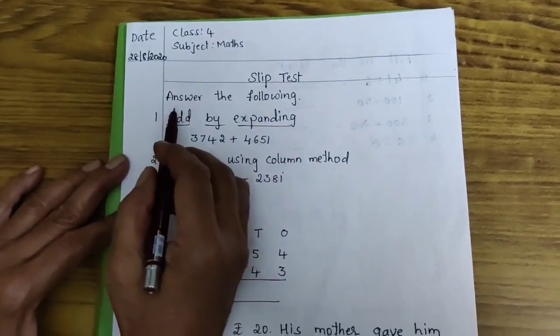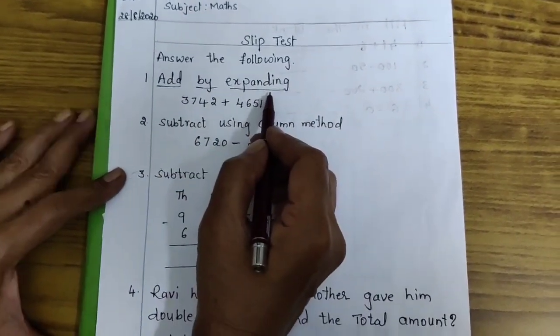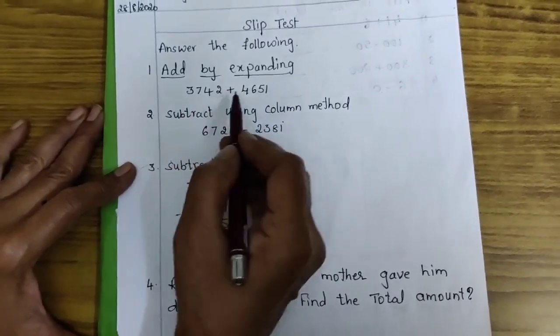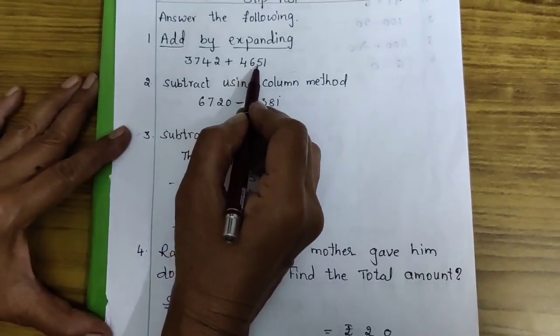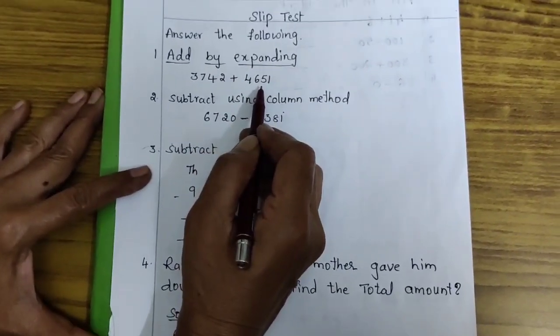First, answer the following. First question is add by expanding. 3,742 plus 4,651. These numbers you expand and then add children.